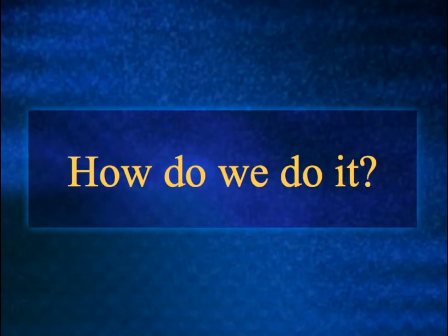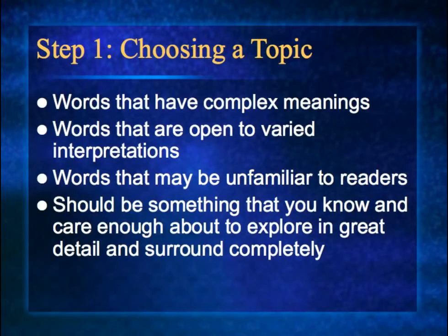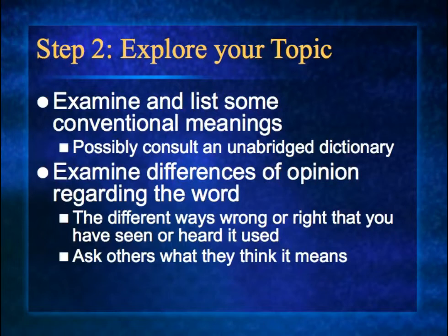So how do we do it? First, you want to choose a topic — pick words that have complex meanings, words open to varied interpretations, words that may be unfamiliar to readers, and words that you know and care enough about to explore in great detail. You'll also want to examine and list some conventional meanings by looking at an unabridged dictionary, which gives you every single meaning ever about a word. Then examine differences of opinion regarding the word and the different ways, wrong or right, that you have seen or heard it used.